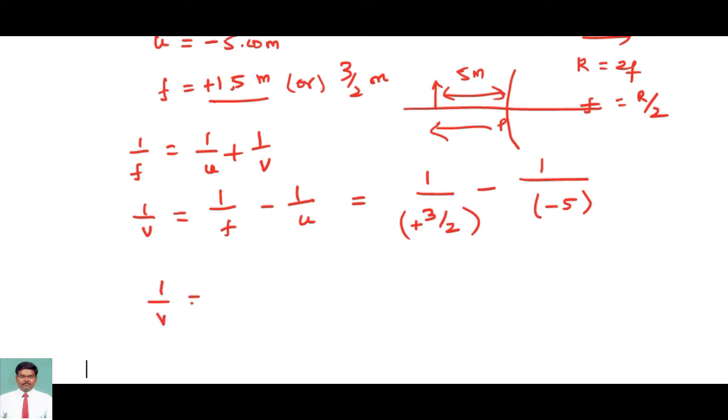This will be 1 by v is equal to 2 by 3, and minus and minus become plus 1 by 5. We cross multiply and add, so it will be equal to...